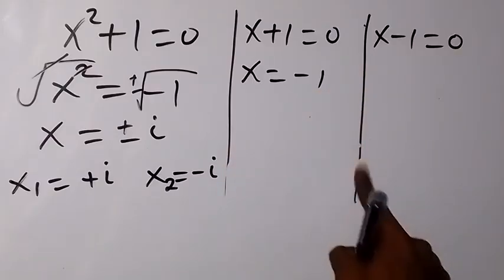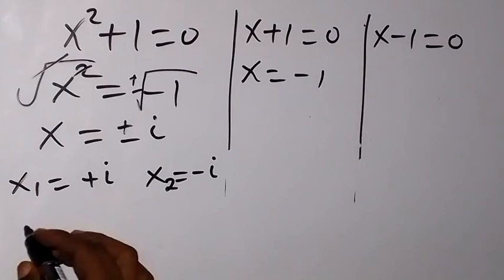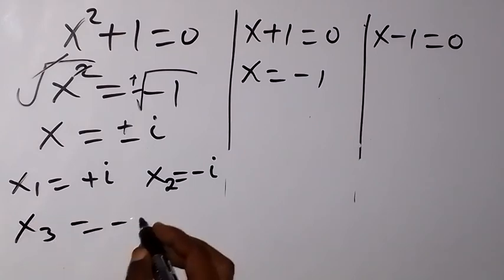So which we can call the third value of x. So we can say the third value of x, x3, equals to minus 1.